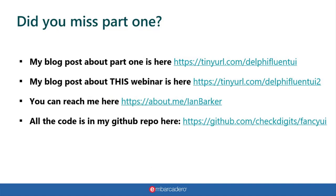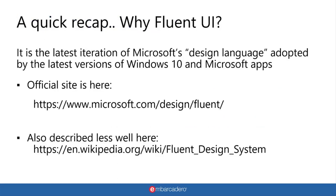If you've missed part one, or you're not really following along because you're doing something else, don't worry — everything's up on the web. This week is Delphi Fluent UI part two, but part one is at tinyurl.com/DelphiFluentUI. There's also a blog post about this webinar. All of the code you're going to see today is up on a repo on GitHub at github.com/checkdigit/fancyUI, where you can download it and have a play yourself.